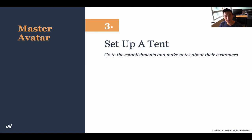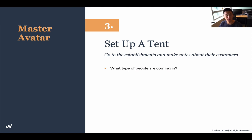Step three is to set up a tent. Now that we've dissected them and done our online research, it is time to go to the location and actually take notes of their customers. When I say set up a tent, I don't literally mean set up a tent — I mean go there and observe them, whether you're sitting in your car or just loitering around. You just need to be there for an extended period of time to do your on-site primary research.